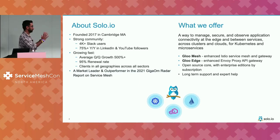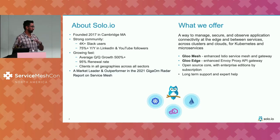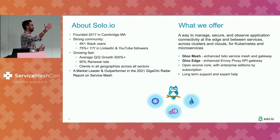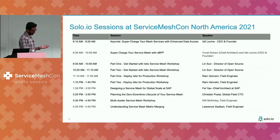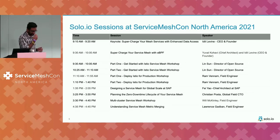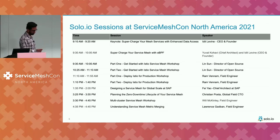The two main products that we have are Gloo Mesh, which is our enterprise Istio, and then Gloo Edge, which is our enterprise Envoy that sits at the edge. With Gloo Mesh, we also have a gateway solution that brings in all of the API gateway functionality to the Istio ingress gateway.